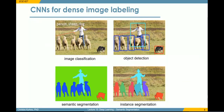Semantic segmentation is a form of dense prediction task. We have seen previously that image classification assigns a label describing the whole image, and detection isolates objects in the image. Semantic segmentation basically tries to classify every single pixel in the image. There is also instance segmentation, which attempts to classify only the pixels of particular objects in the image, and we will also look at that.